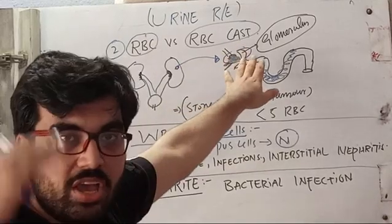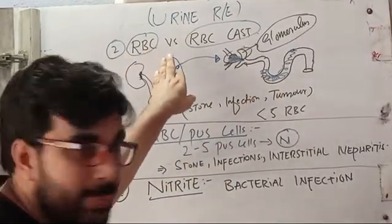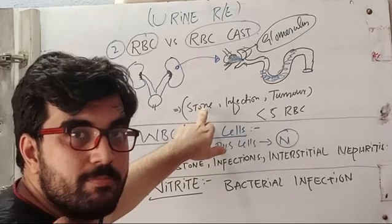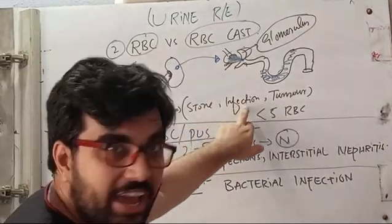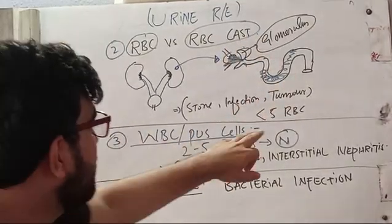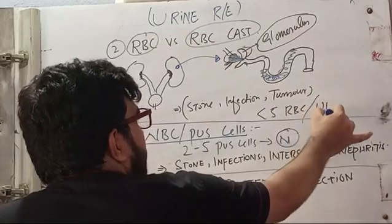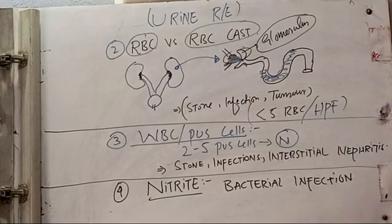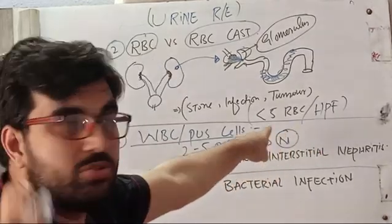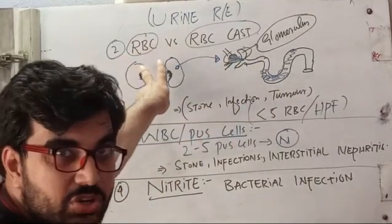Whenever you see RBC casts, think of pathology at the glomerulus and consider causes of glomerulonephritis. If you see only RBCs, think of something lower in the tract — the ureter, bladder, or urethra — such as stones (which give RBCs, not RBC casts), UTI (which gives RBCs, not RBC casts), or tumors. The normal RBC count in urine is less than five RBCs per high-power field according to USMLE and standard medical references.